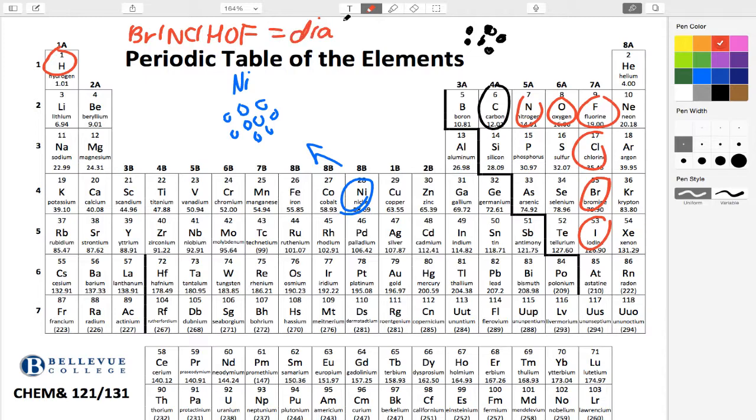Dia means two. Atomic means atoms. So diatomic elements. And what that means is that when you look at atoms of nitrogen here, nitrogen, normally an atom is just one circle. Nitrogen, because it's part of Brinkelhoff, likes to be in a group of two. So nitrogen molecules exist in packets of two. And so when you have two atoms, anytime you have more than one atom bonded to another, it's called a molecule. So these are nitrogen molecules. And because there's two in each molecule, it's called N2.